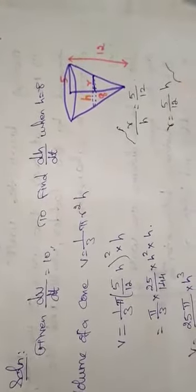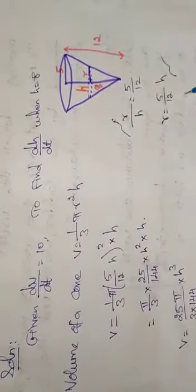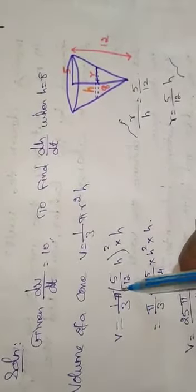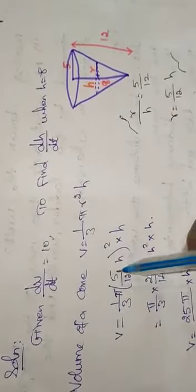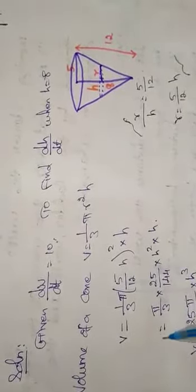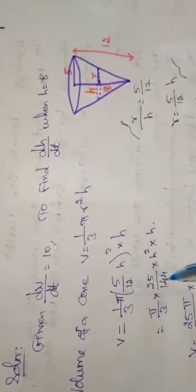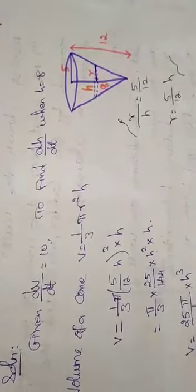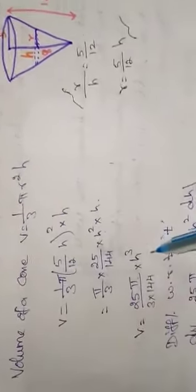In the given data, we have to find the value of r. Instead of r, we are going to substitute these values. So V is equal to 1/3 π into, instead of r, substitute 5/12 h whole squared into h, which is equal to π/3 into 5 square 25, 12 square 144, h square into h. Therefore V is equal to 25π / (3 × 144) into h³.